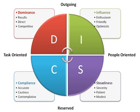Steadfastness: People with high S scores want a steady pace, security, and do not like sudden change. High S individuals are calm, relaxed, patient, possessive, predictable, deliberate, stable, consistent, and tend to be unemotional and poker-faced. Low S intensity scores are those who like change and variety and are described as restless, demonstrative, impatient, eager, or even impulsive.